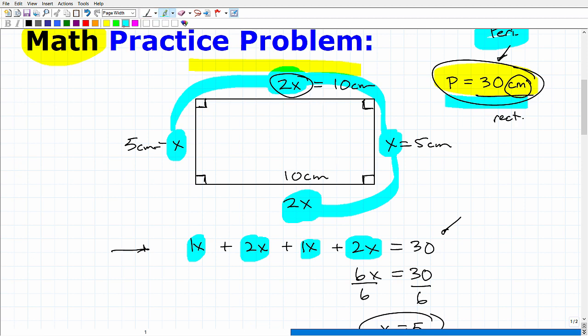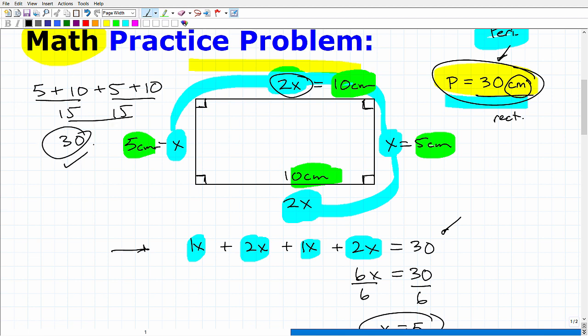Now let's just check our work here. If I take 5 plus 10 plus 5 plus 10, does that add up to 30? Let's see here. 5 plus 10 plus 5 plus 10. I'm finding the perimeter, so this would be 15, and this is 15, and 15 and 15 is 30. So it checks out.